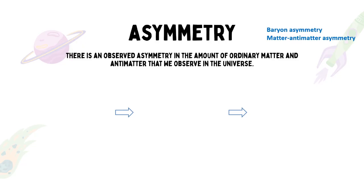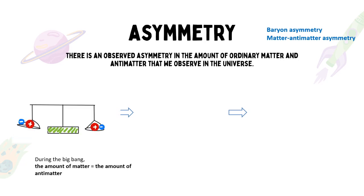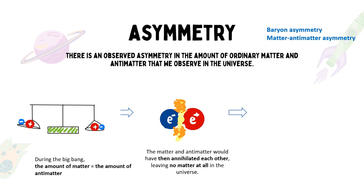The observed asymmetry between the amount of ordinary matter we observe compared to antimatter is known as baryon asymmetry, or the matter-antimatter asymmetry, and this is one of the largest unsolved problems in modern physics. During the Big Bang, an equal amount of matter and antimatter should have been produced according to our current theory of the Standard Model of Particle Physics. The matter and antimatter would have then annihilated each other, leaving no matter at all in the universe. However, we know that this is not the case, as evidenced by our very existence.